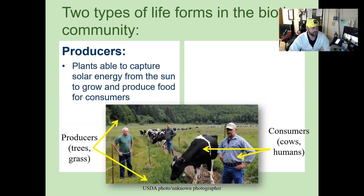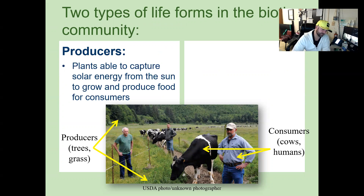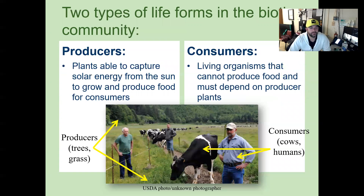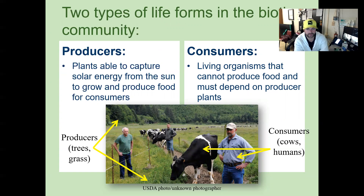You have producers, which are plants able to capture solar energy from the sun to grow and produce food for consumers. So your producers here are going to be the trees and grass. And we have consumers, which are living organisms that cannot produce food and must depend on producer plants. So our consumers in the picture would be us as humans and cows.